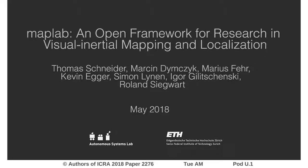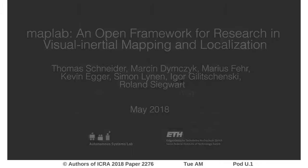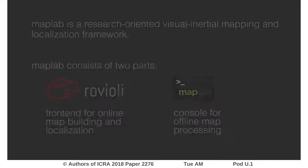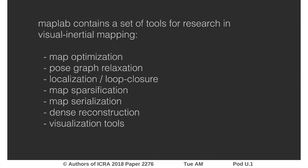We present MapLab, an open framework for research in visual inertial mapping and localization. The MapLab framework consists of two parts: Rovioli, an online frontend for mapping and localization, and the MapLab console to process maps offline. MapLab contains a set of tools that enables the user to build, refine, and augment the sparse visual inertial maps.